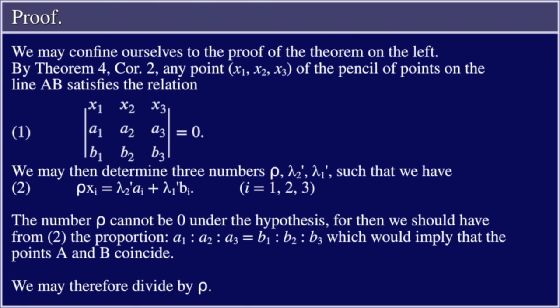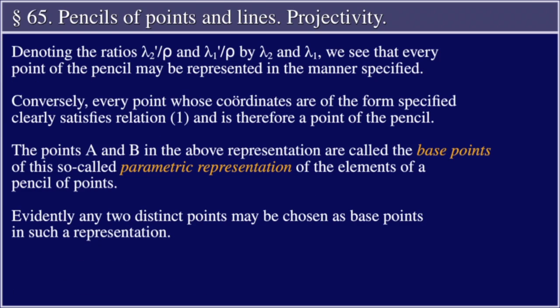The number ρ cannot be zero, for then we should have from Equation 2 the proportion a₁ : a₂ : a₃ = b₁ : b₂ : b₃, which would imply the points A and B coincide. We may therefore divide by ρ, denoting the ratios λ₂′/ρ and λ₁′/ρ by λ₂ and λ₁. We see that every point of the pencil may be represented in the manner specified. Conversely, every point whose coordinates are of the form specified clearly satisfies relation 1 and is therefore a point of the pencil. The points A and B in this representation are called the base points of the parametric representation of the elements of a pencil of points. Evidently any two distinct points may be chosen as base points.